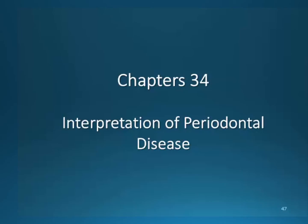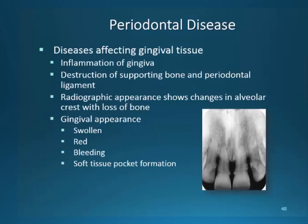We're going to be moving into Chapter 34, which will be on the interpretation of periodontal disease. Periodontal disease is a disease that affects the gingiva and periodontal structures. This disease causes inflammation and bone loss. It is detectable on radiographs, but like dental caries, destruction must be advanced enough to detect on film. The alveolar crest is where you will find the initial signs that the disease is present.